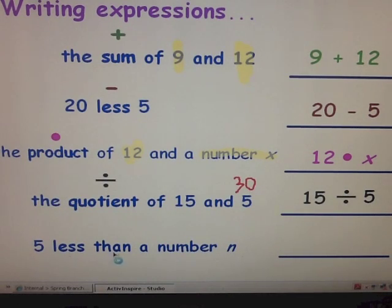The last example is 5 less than a number n. Less than is our clue. It means to subtract. It's not 5 minus n. It's 5 less than n. We're not told what this number is. Our expression would be n minus 5. 5 is less than n, so you take it away from n. Not 5 minus n. Be very careful on that one.